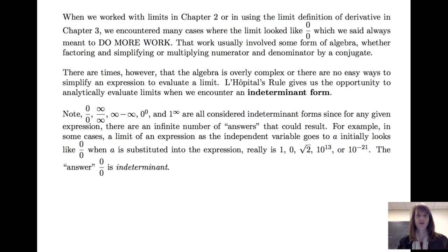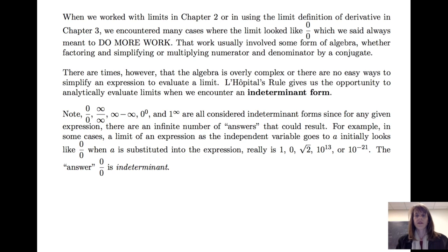Now in the past, in Chapter 2, when we worked with limits or when using the limit definition of derivative, we encountered many cases where the limit initially looked like 0 over 0, which we always said meant to do more work. Usually that work involves some sort of algebra, whether that's simplifying after we factor or multiplying the numerator and denominator by a conjugate. But there are times that algebra is overly complex, so there are no easy ways to simplify an expression in order to evaluate the limit.